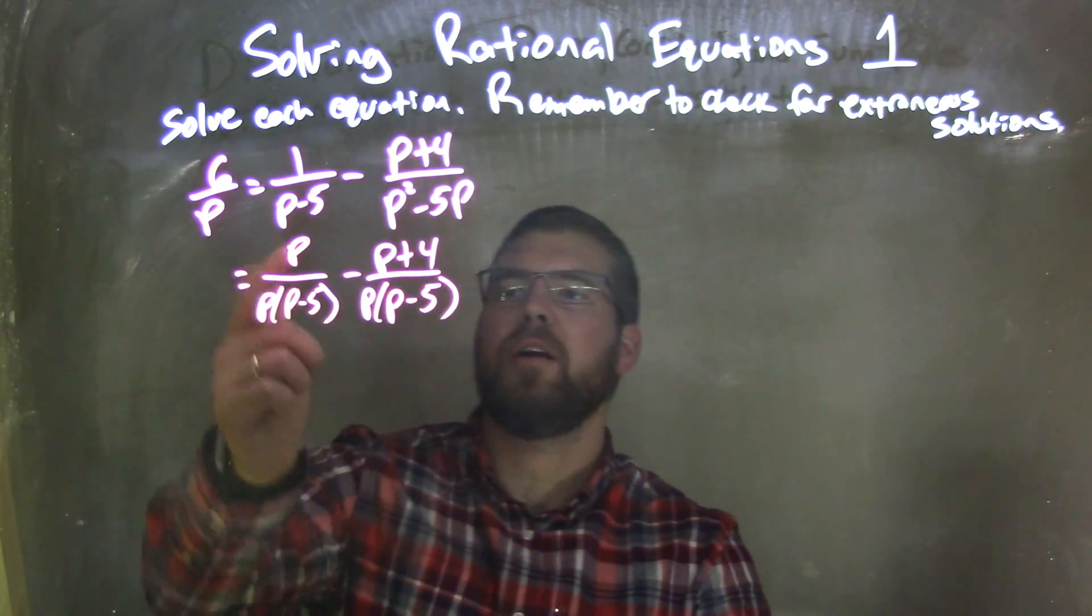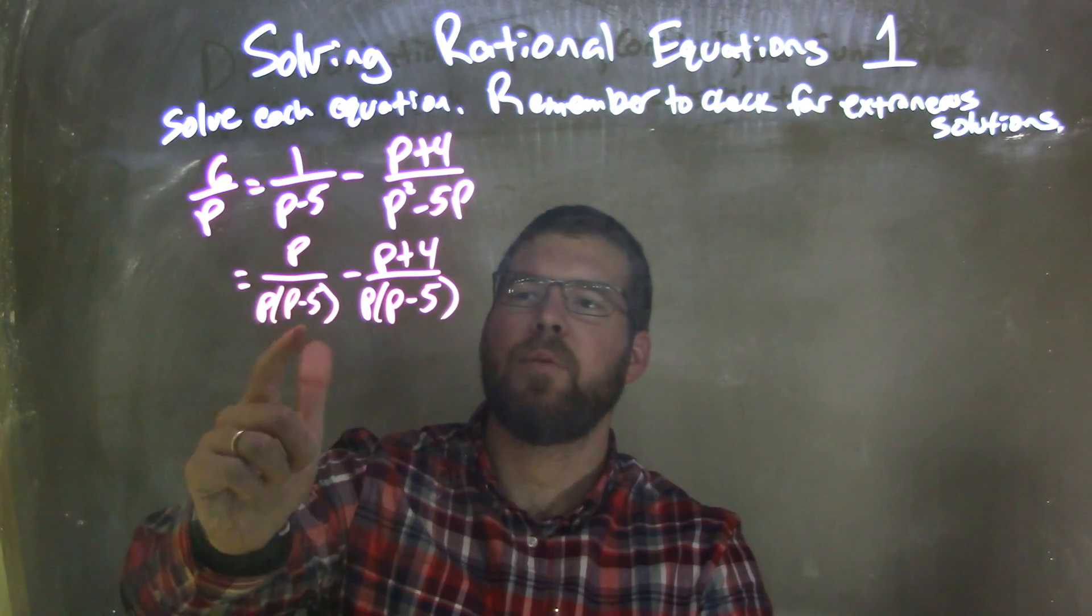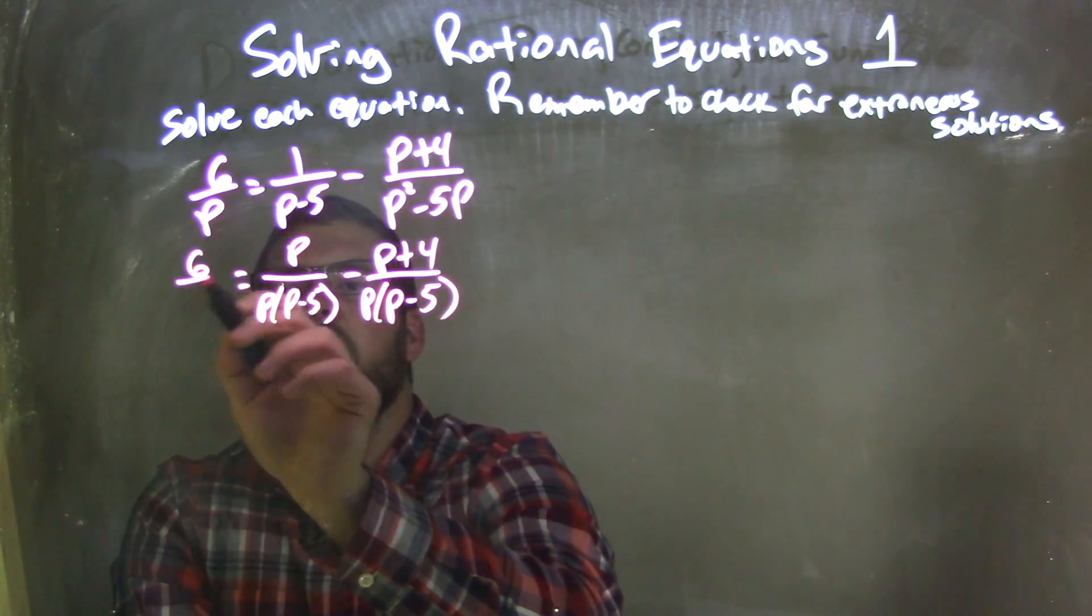So now we have the same denominator, right? p over p is just that 1, and I have p minus 5 right there, and 6 over p here.